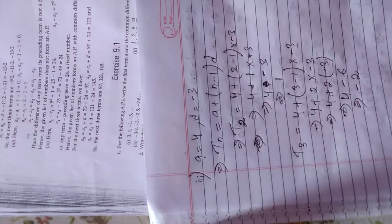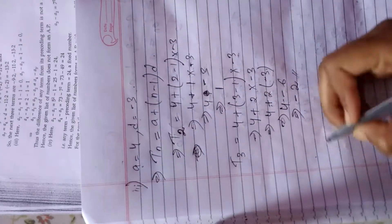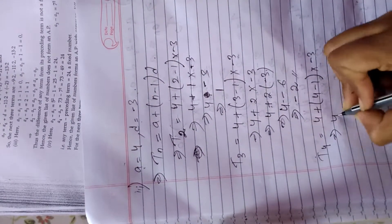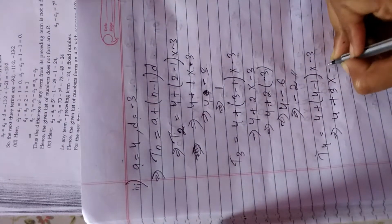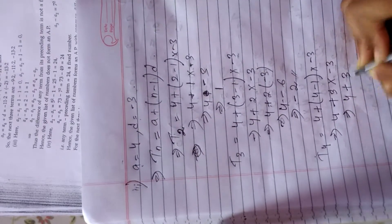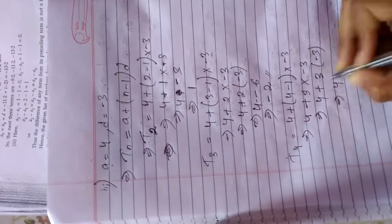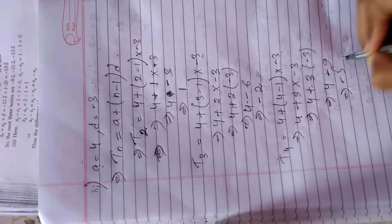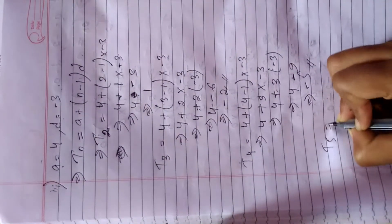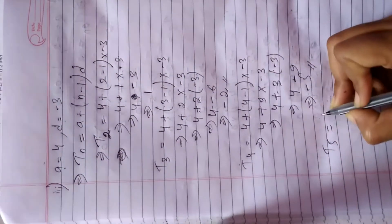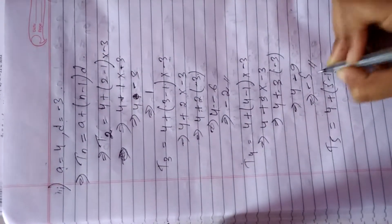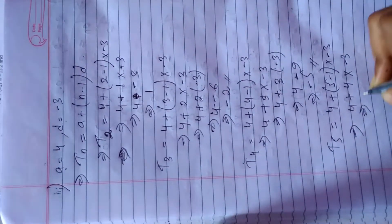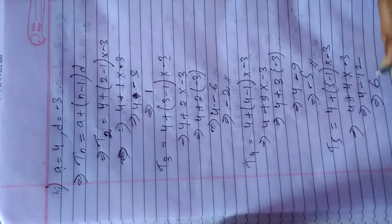T4: 4 plus (4 minus 1) into (-3) = 4 plus 3 into (-3) = 4 minus 9 = minus 5. T5: 4 plus (5 minus 1) into (-3) = 4 plus 4 into (-3) = 4 minus 12 = minus 8. So the terms are 4, 1, -2, -5, -8.